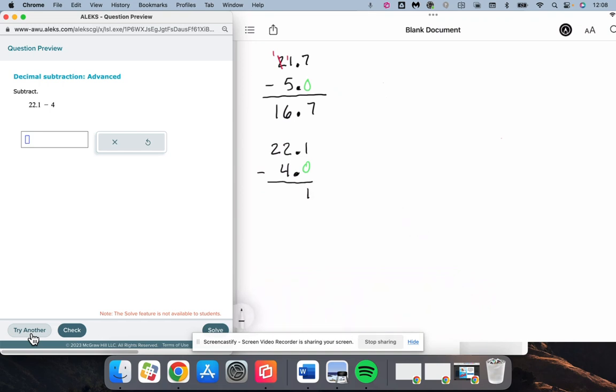1 minus 0 is 1. We cannot take 4 away from 2, so we need to borrow. That becomes a 1. That becomes a 12.